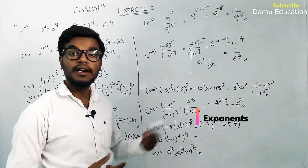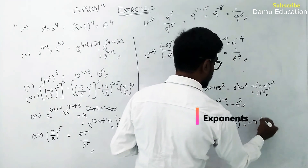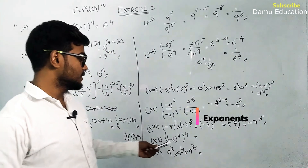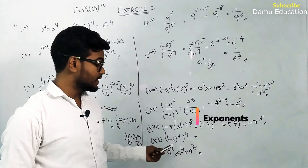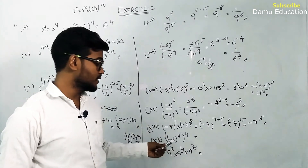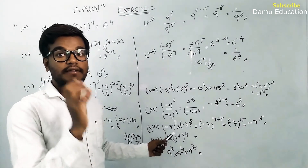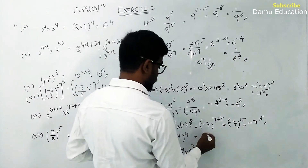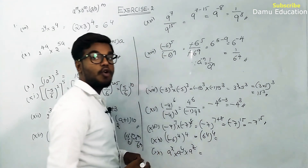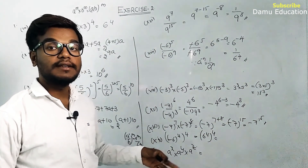Next: minus 6 whole power 4, whole to the power 4. Since power 4 is even, minus becomes plus, giving 6 power 4. Then using a power m whole power n: 6 power 4 into 4 equals 6 power 16.